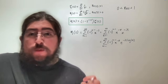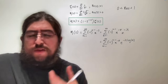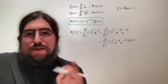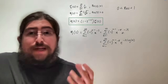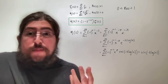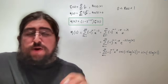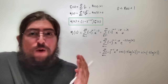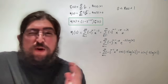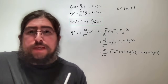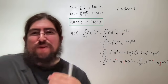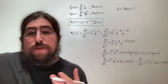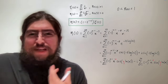We can split n to the negative s into its real and imaginary parts. We rewrite n to the negative i·t as e to the i times something, then apply Euler's formula: cosine minus i sine. We can separate the sum into its real part and imaginary part. To make the calculation in Desmos easier, we replace sigma with x and t with y, since they represent the real and imaginary components — like x and y on the complex plane. We also replace log with ln since the argument of the logarithm is a real number.